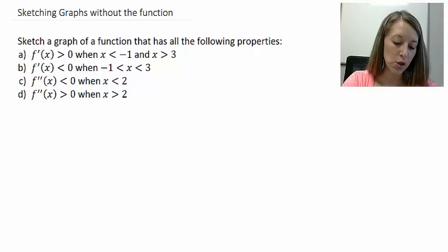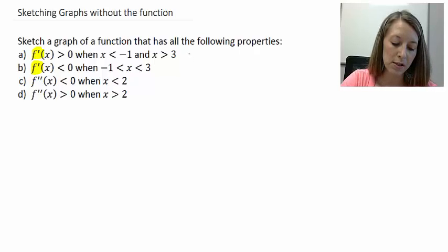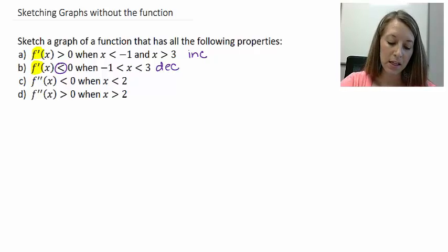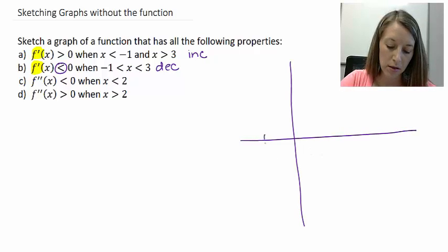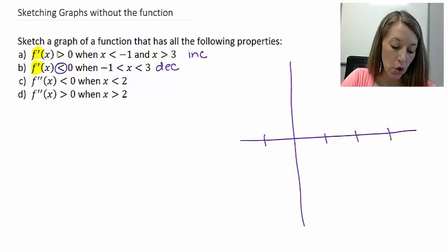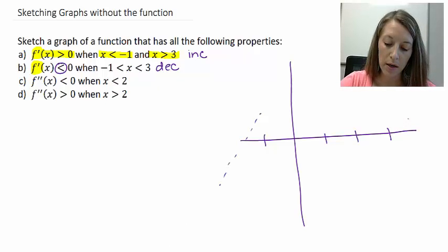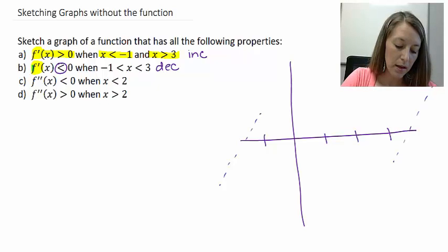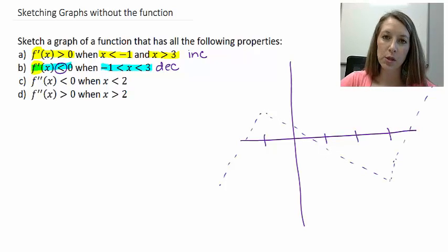In this second example, parts A and B give us first derivative information. When the first derivative is greater than zero, the graph is increasing; when less than zero, the graph is decreasing. This information ranges from negative one to three. The graph is increasing for x less than negative one and for x greater than three, and decreasing between negative one and three. So I can sketch a possible graph from that information.